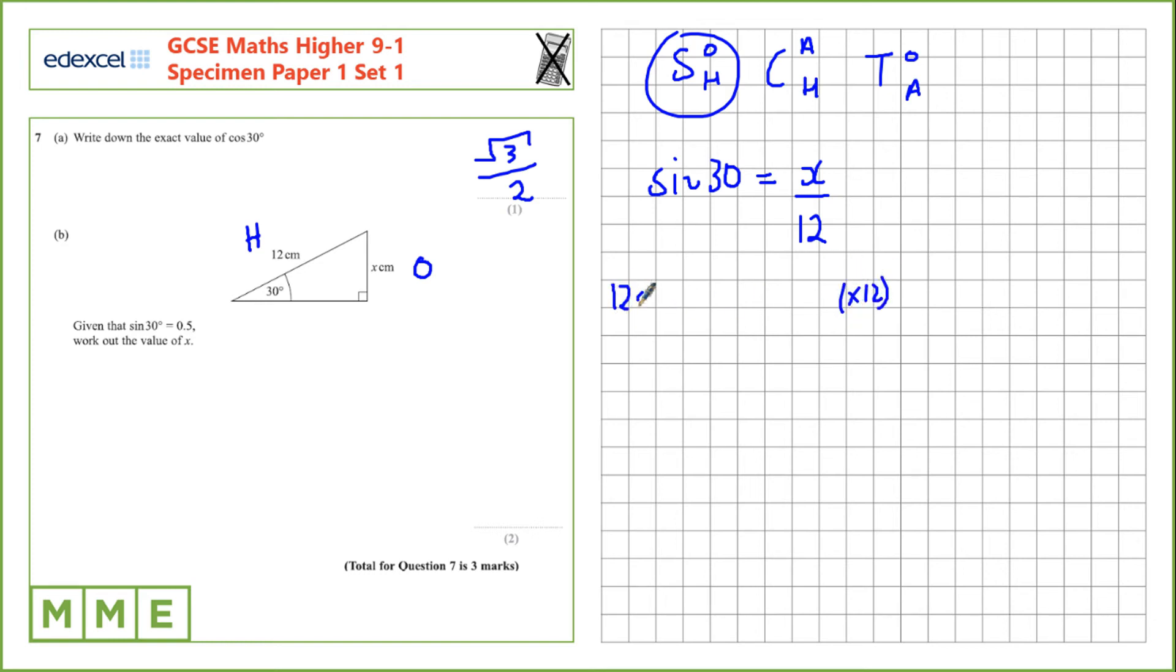On the left hand side we have 12 times sine 30. On the right hand side multiplying by 12 cancels out the division by 12. So x is 12 sine 30.